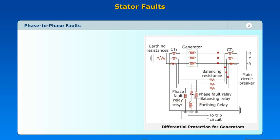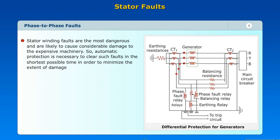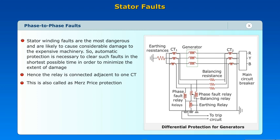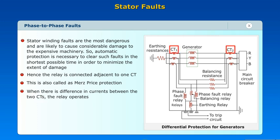Phase-to-phase faults: stator winding faults are the most dangerous and are likely to cause considerable damage to the expensive machinery. So automatic protection is necessary to clear such faults in the shortest possible time in order to minimize the extent of damage. Hence, the relay is connected adjacent to one CT. This is also called Merz Price protection. When there is a difference in currents between the two CTs, the relay operates.